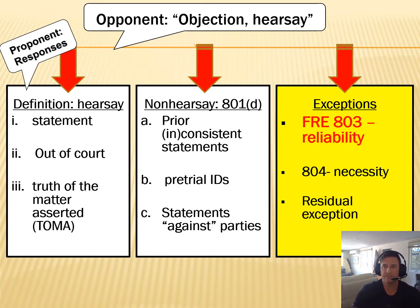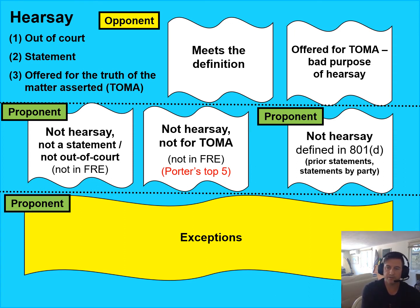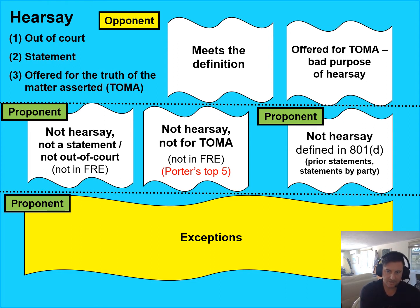This video is about the 803.3 state of mind exception. We're looking at all the options available to the proponent in a checklist fashion. As the proponent, I'd first look at the definition of hearsay and see if there's an argument under it, then whether something is not hearsay under 801d — prior inconsistent statements, prior consistent statements, prior identifications, statements by or attributed to a party and offered by a party opponent. And then lastly, these narrow exceptions that the rules give us.